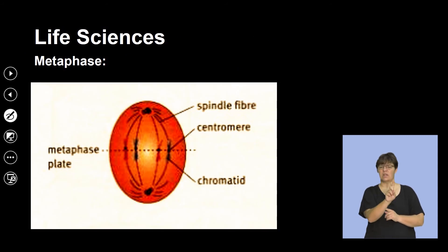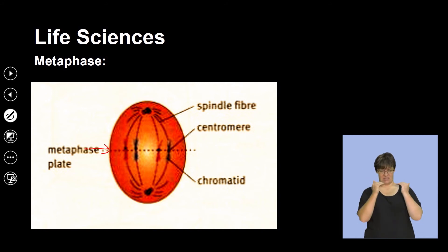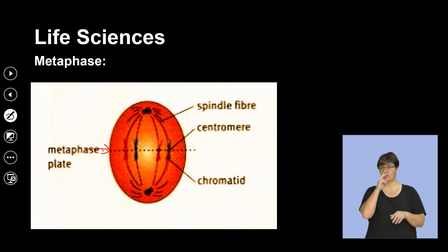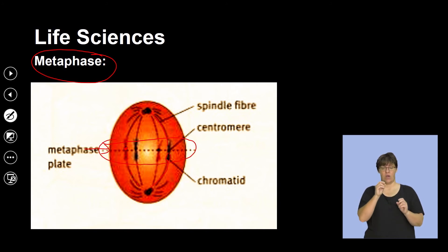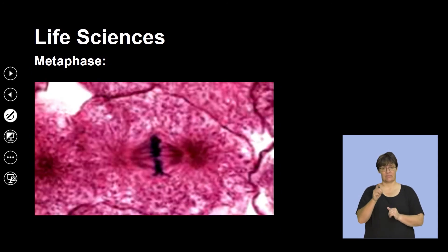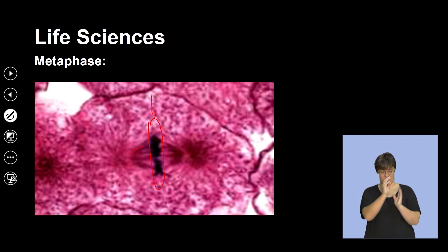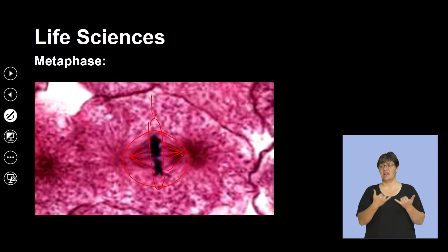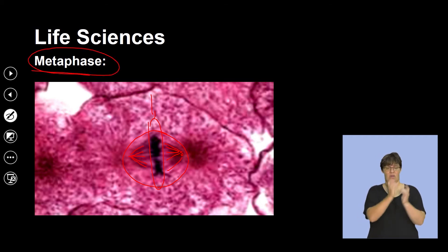Looking at the metaphase illustration, we see this imaginary equator where the chromosomes have arranged themselves along it, with spindle fibers attaching to each chromatid. These chromatids are attached by spindle fibers to the opposite ends. Unique to this stage is the characteristic of chromosomes being arranged along the middle — meeting along the middle of the cell. An electron micrograph illustrates the dense concentration of chromosomes along the center of the cell, with faint images of spindle fibers emerging from the centrioles at the poles.